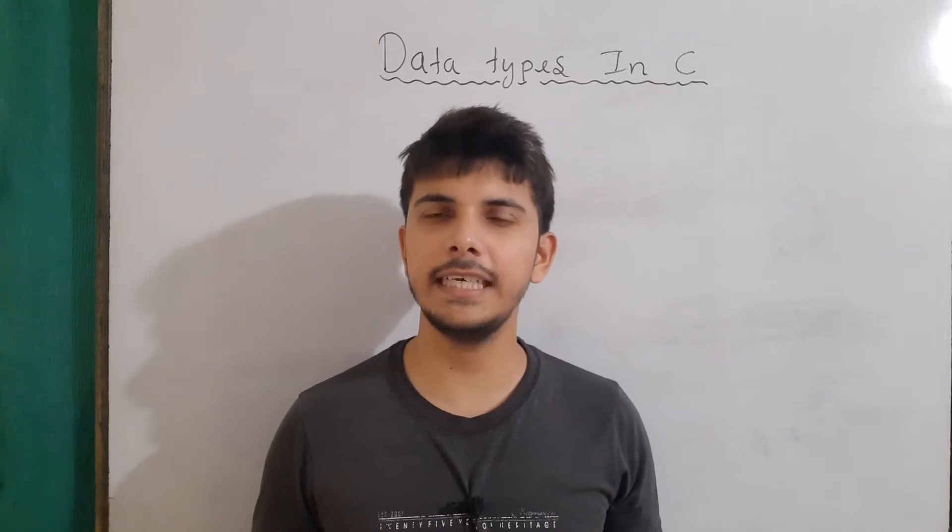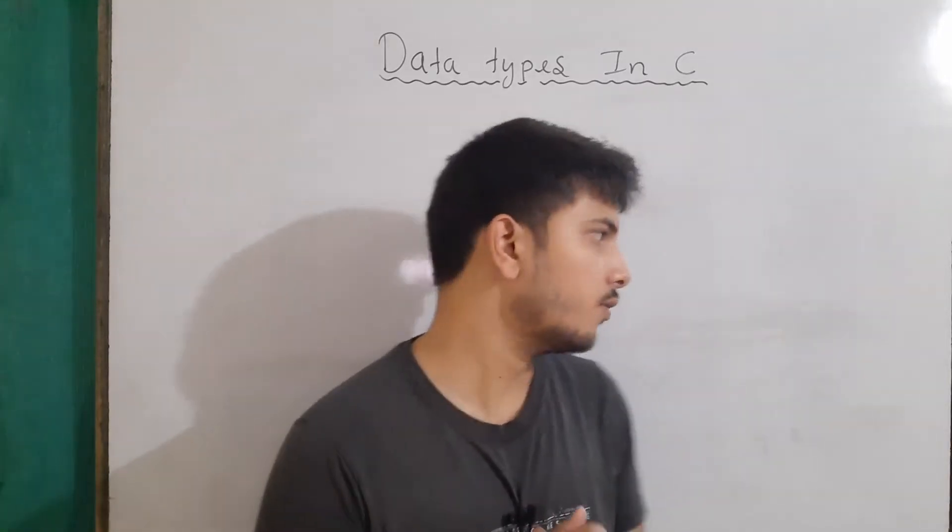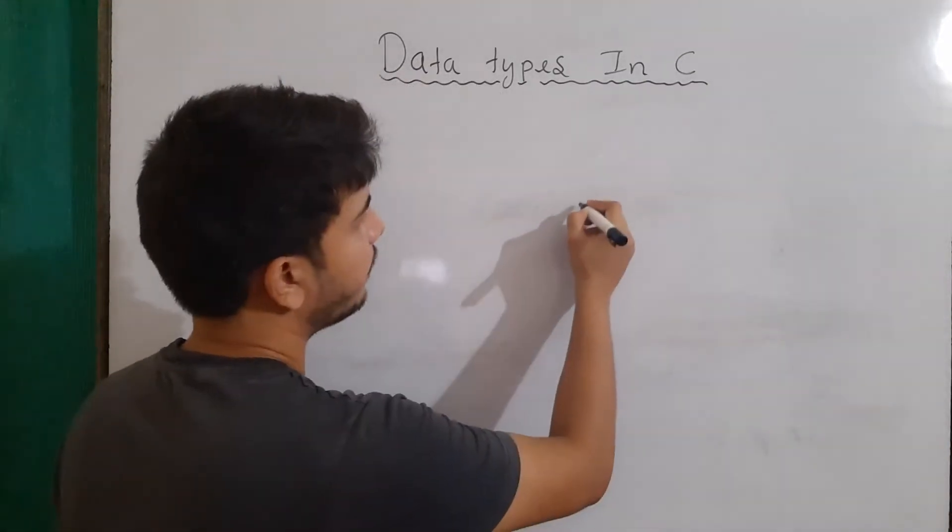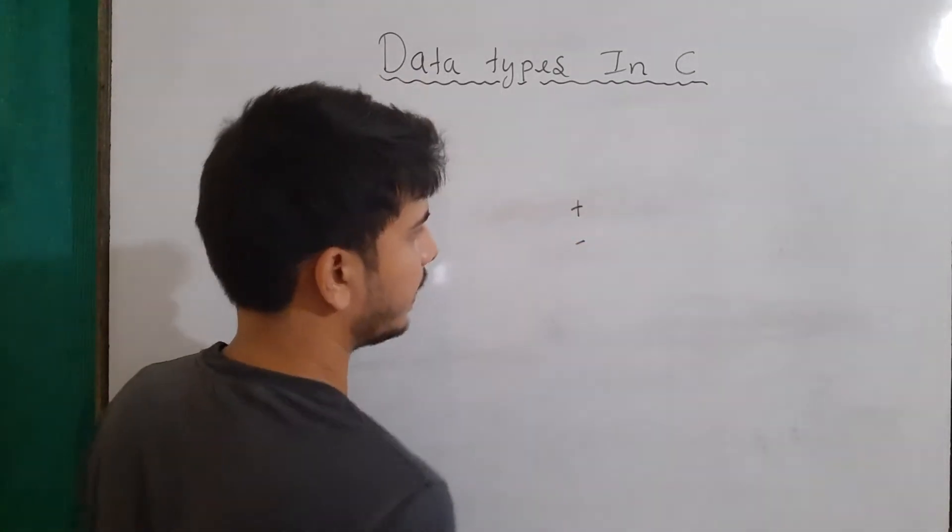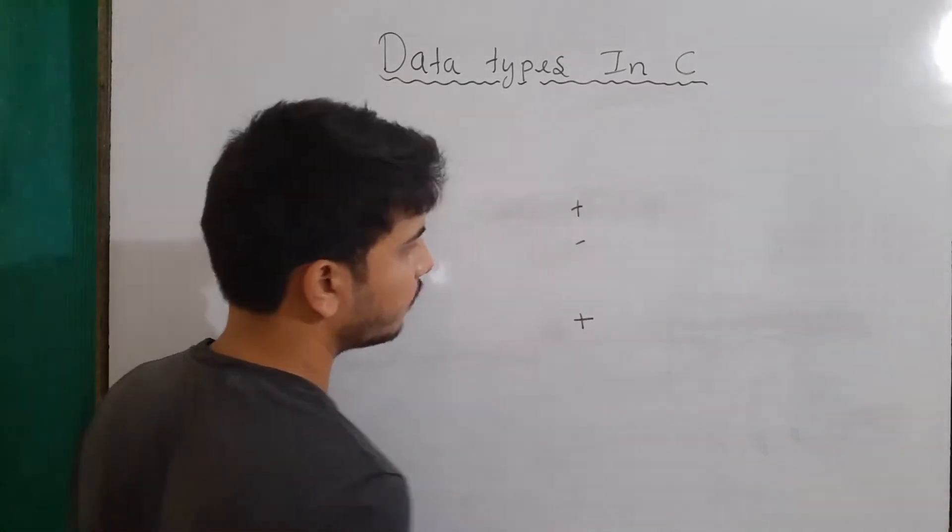Before going to the various data types, one thing I want to tell you is about signed and unsigned things. Signed means the number could be either positive or negative, and unsigned means that the number will always be positive.